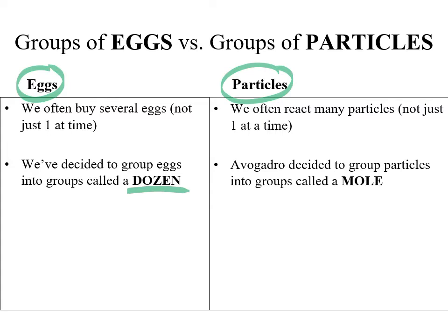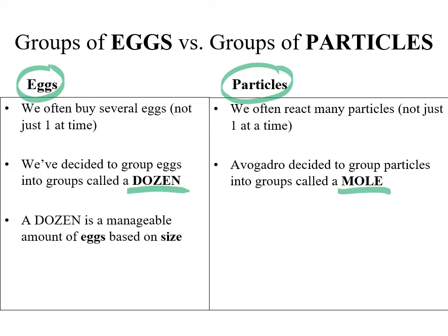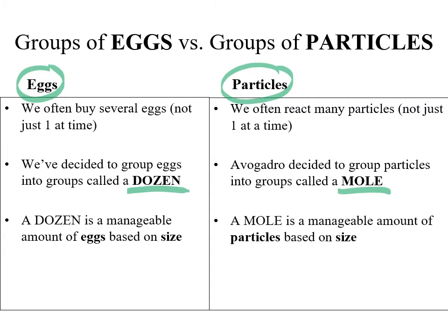Avogadro decided that particles should also be grouped into a particular amount, and that group is called the mole. A dozen is a manageable amount of eggs based on their size and how many you tend to use at once — it's a nice number to deal with. A mole is a nice, manageable amount of particles based on how small they are. So a mole is a larger amount than a dozen, but it's a manageable amount that we can easily communicate.